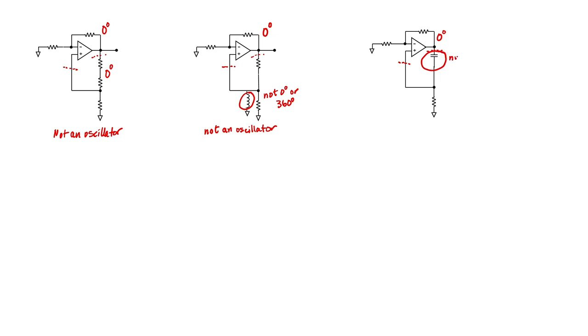This capacitor cannot give us zero degrees, and it cannot give us 360 degrees either. We're not going to be able to get a net phase shift around the loop of zero or 360 degrees. This circuit is not an oscillator.